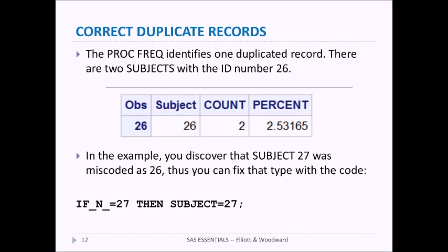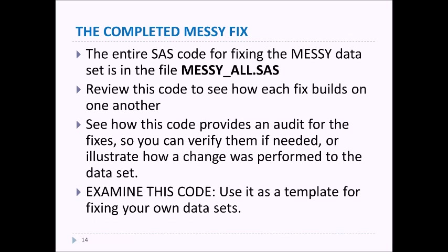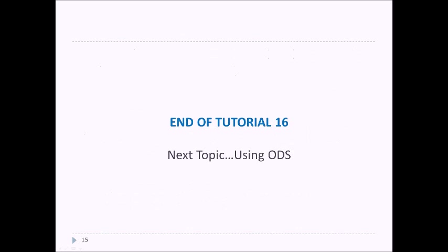That's really all the cleanup we're going to do for this data set. Here's a list of the things we did — you can use this as a checklist if you have a data set with issues. You may not have all these issues, but these are the kinds of things to check. Finally, the complete code for everything we did is in a file called messyall.sas. It's a good idea to review it to see how each fix builds on the others, and to see how it provides an audit trail so you can verify changes later and show people how they were made. That's the end of tutorial 16. The next topic will be using ODS.